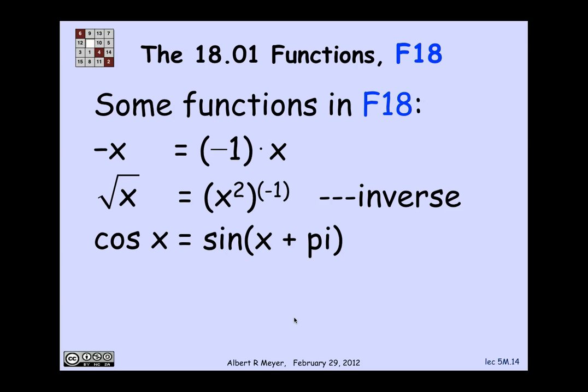Why is that in there? Pi is a constant. X is the identity. So the sum is a function that's in F18. And then if I compose that function with sine, I get sine of x plus pi, which is cosine x. So cosine x is there.